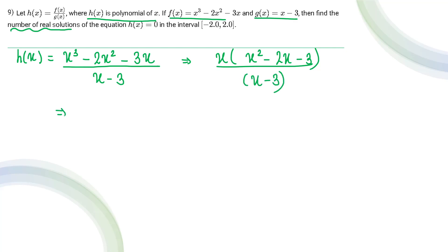On splitting the quadratic equation I will be getting (x minus 3)(x plus 1) upon x minus 3. Now x minus 3 gets cancelled out. Finally we have h(x) as x(x plus 1). So basically this is a quadratic equation with roots as 0 and minus 1.